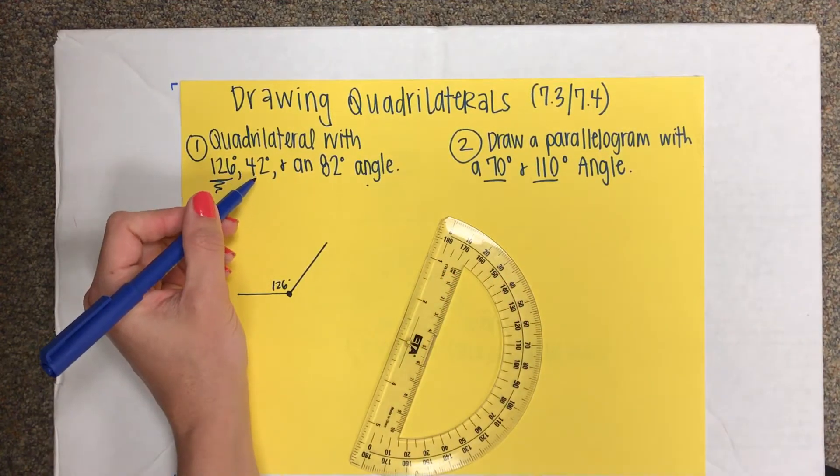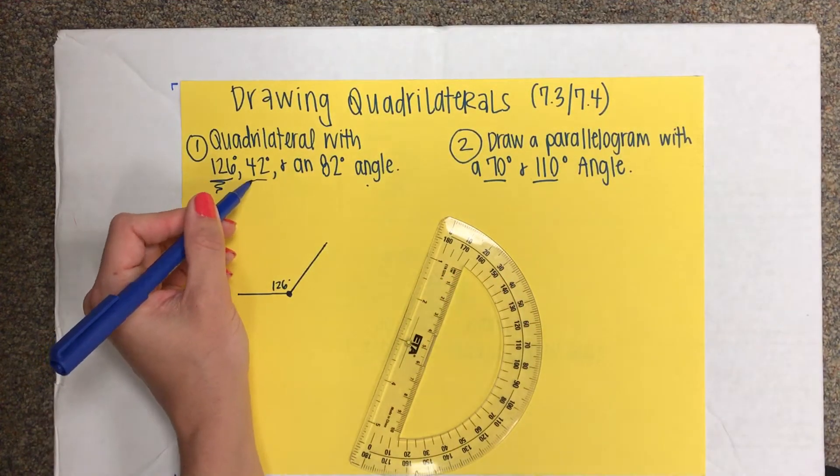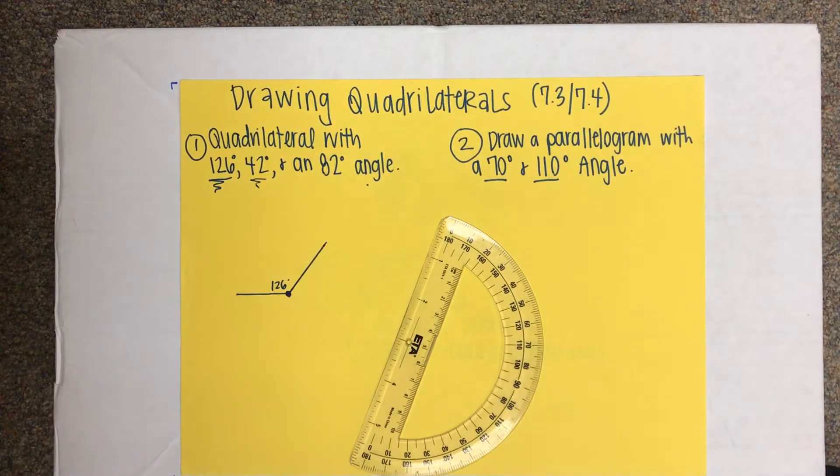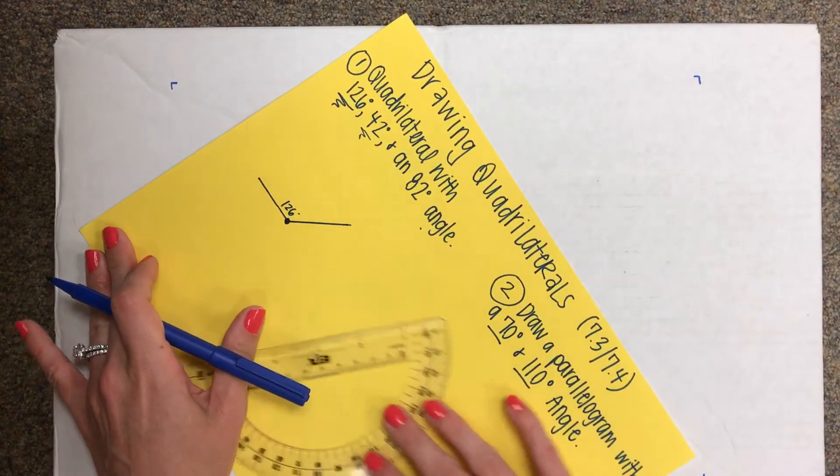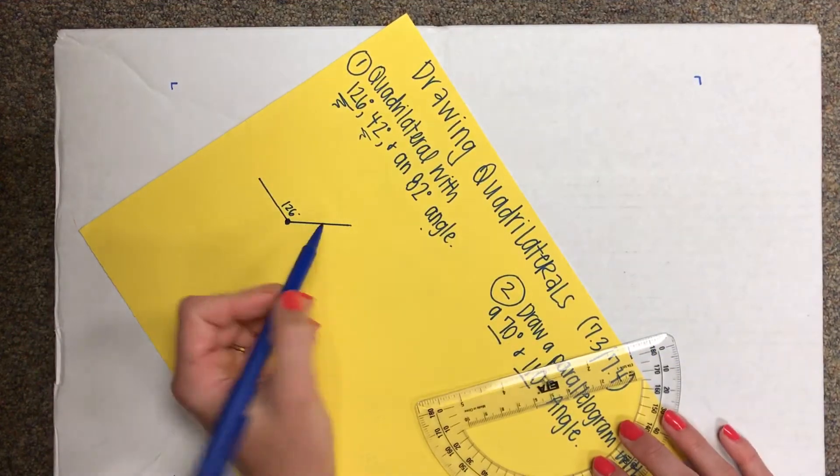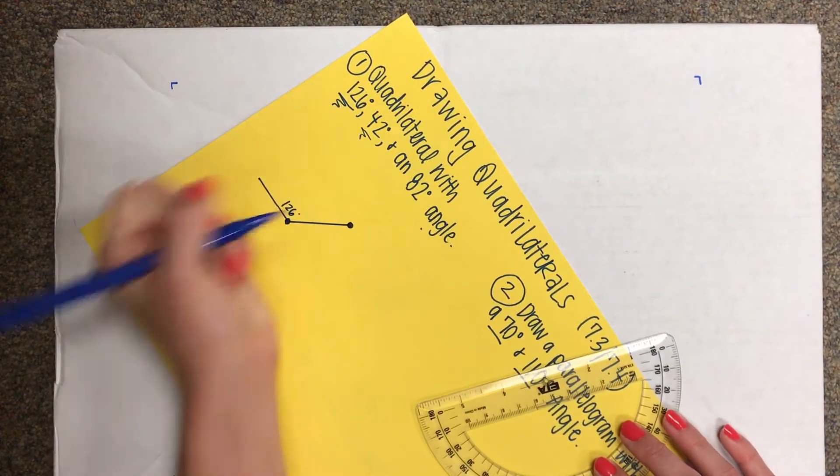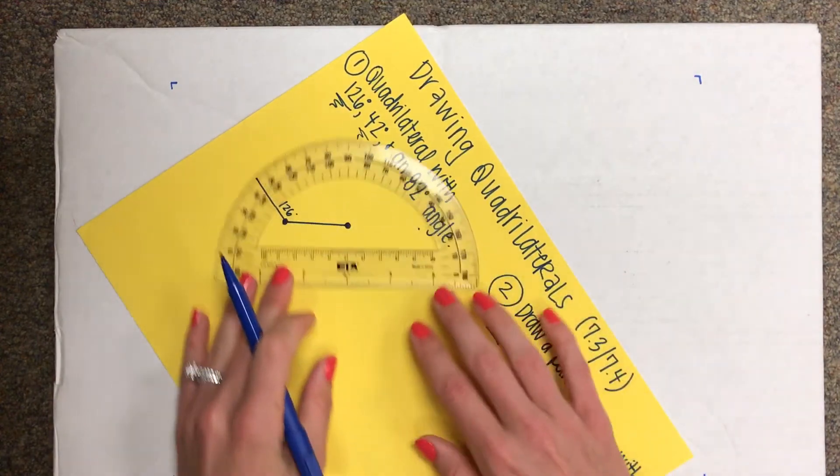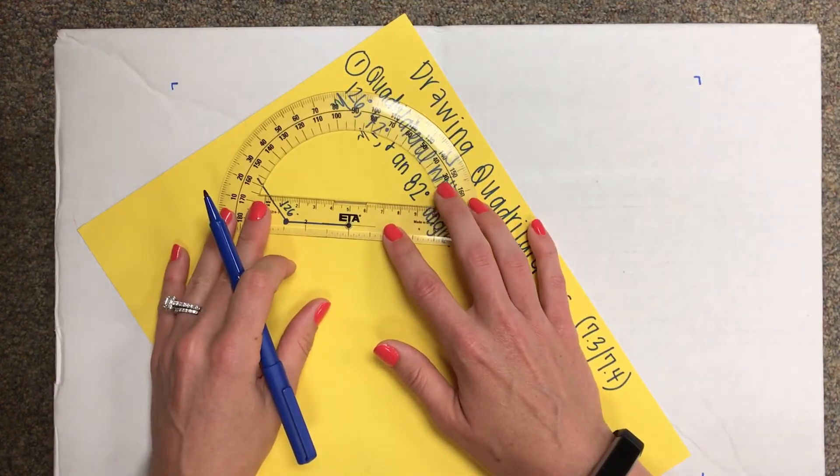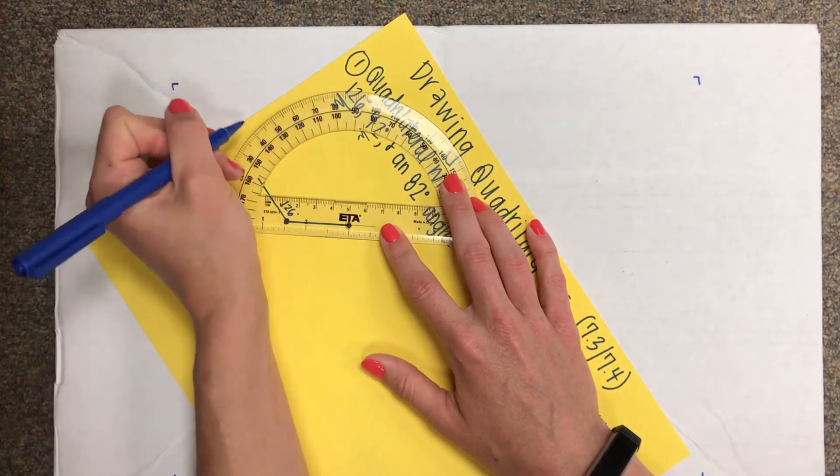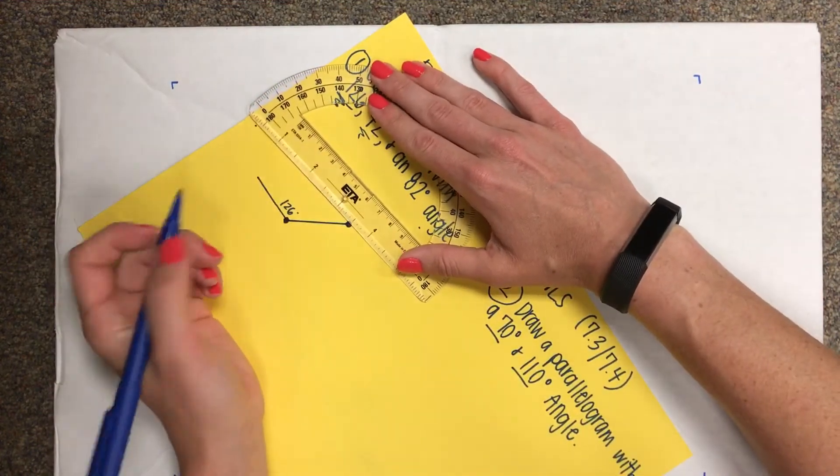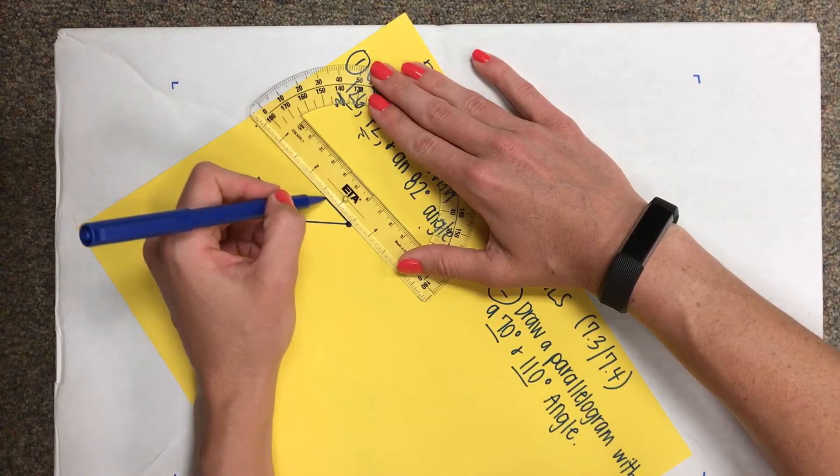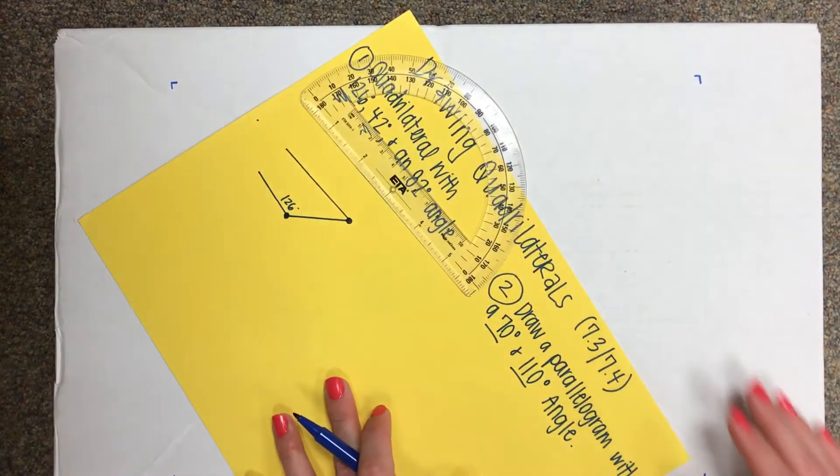The next thing that I'm going to do is I'm going to do the smallest angle right next to that one. What I can do is rotate the paper again, and this line that I just drew becomes my new dot. 42 degrees, line to line, dot to dot, will be right here. Again, connecting the dot to the tick mark to make your straight line.